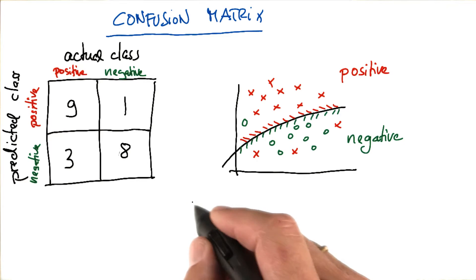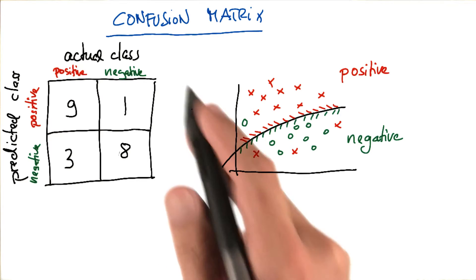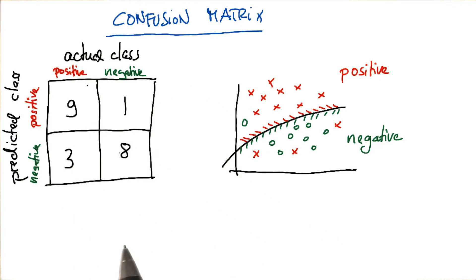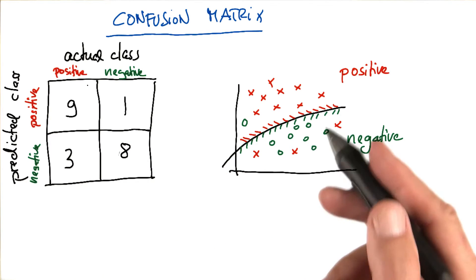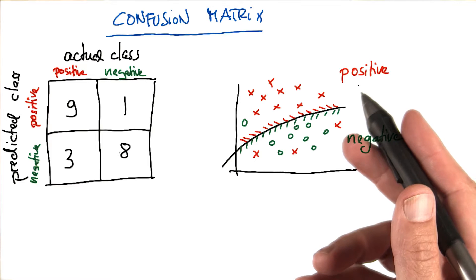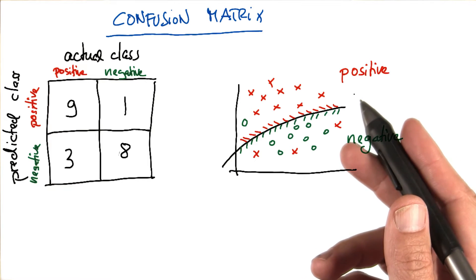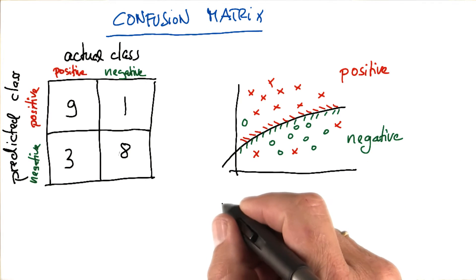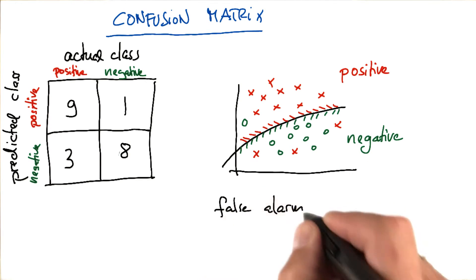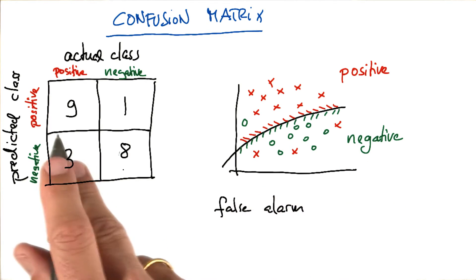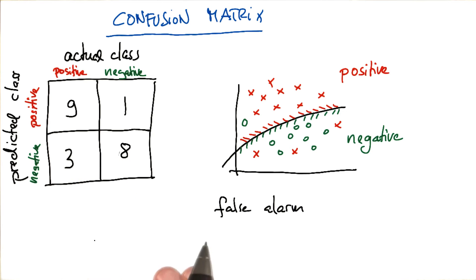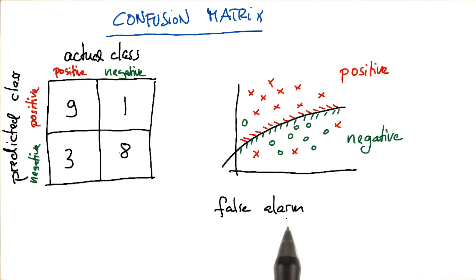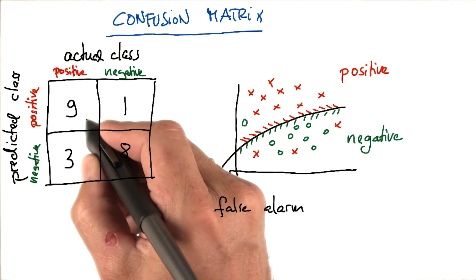I have one final question here. Suppose this is an alarm system, and positive means there's a burglar in your house. What type of events, in these four different events, would you think best characterizes a false alarm of your alarm system?